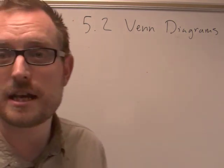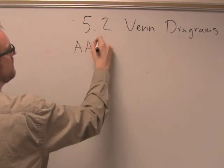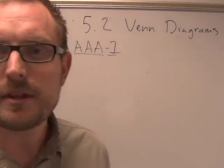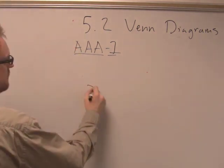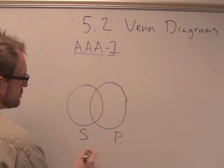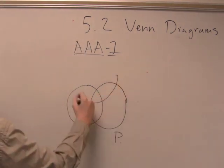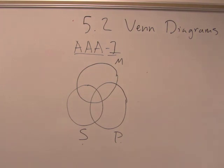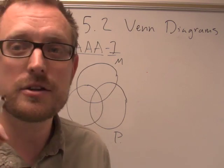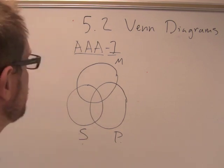Let me give you an example. Let's use our same example from 5.1. We had an AAA-1, and the AA is the mood and 1 is the figure. Now, in order to graphically represent this, we're going to draw a normal Venn diagram. Here's our S and P, our major term and minor term, but we're going to draw one more circle on top of that.